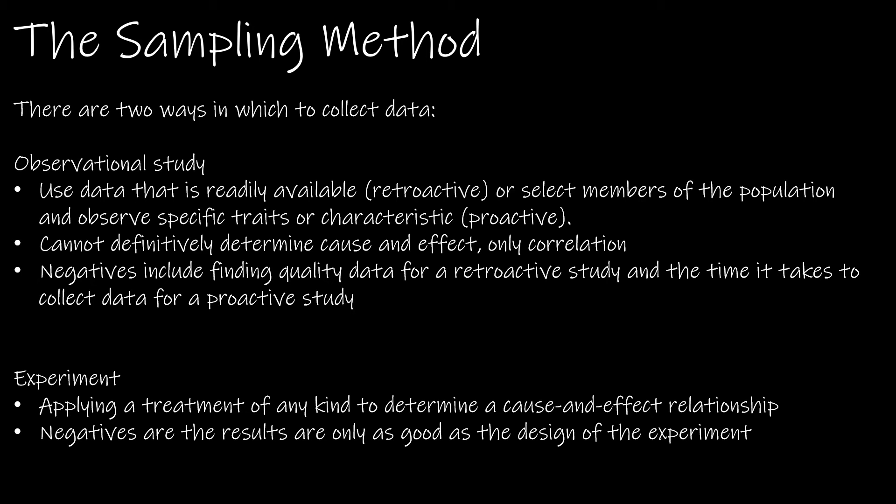Now let's look at the sampling method. In the next two videos we'll spend more time on each, but here's the brief overview. There are two ways to collect data: an observational study or an experiment. An observational study is just that — we observe what's happening. You can observe things that have already happened (a retroactive study, where you're observing data collected in the past), or you can look forward proactively and observe specific traits or characteristics about selected members of the population. The drawback of an observational study is that you cannot definitively determine cause and effect — you can only determine if two things are correlated or related.